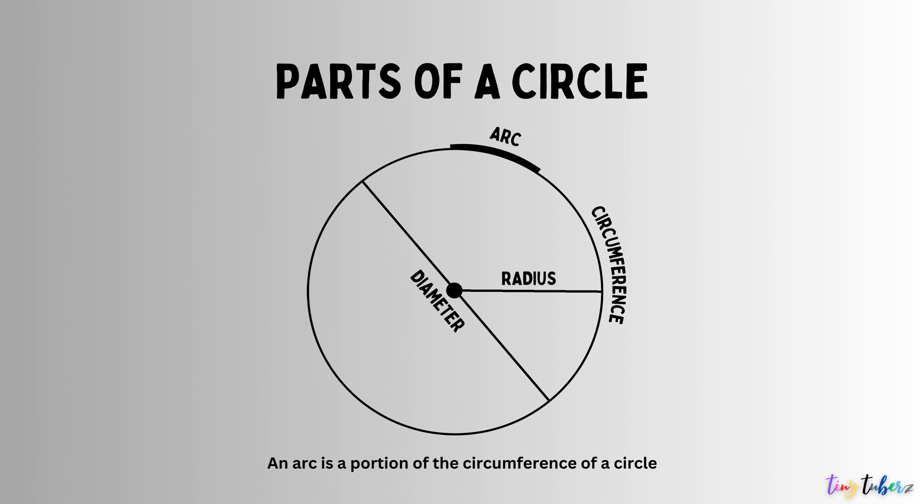Arc. An arc is a portion of the circumference of a circle. It is defined by two endpoints on the circumference and the curved line connecting them.